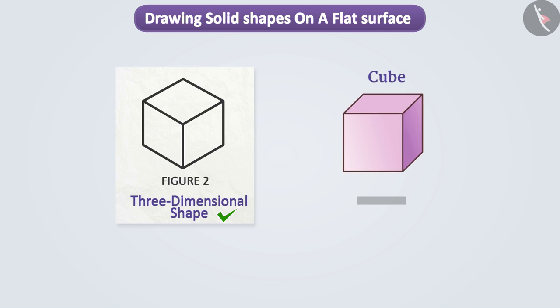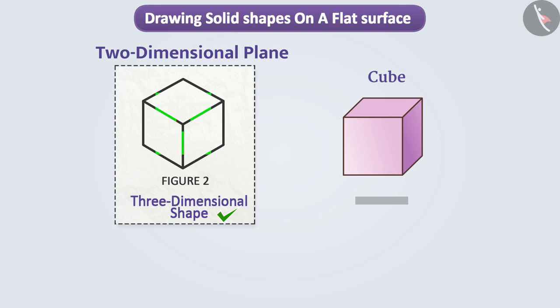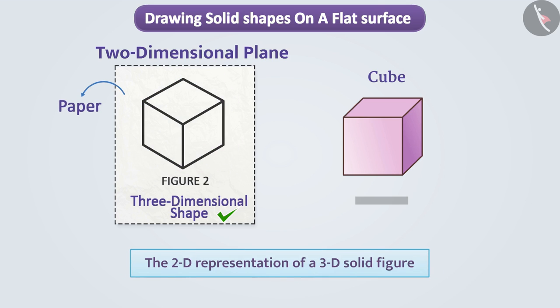In this way we can draw any three-dimensional figure on a two-dimensional plane like on paper. We call this the 2D representation of a 3D solid figure.